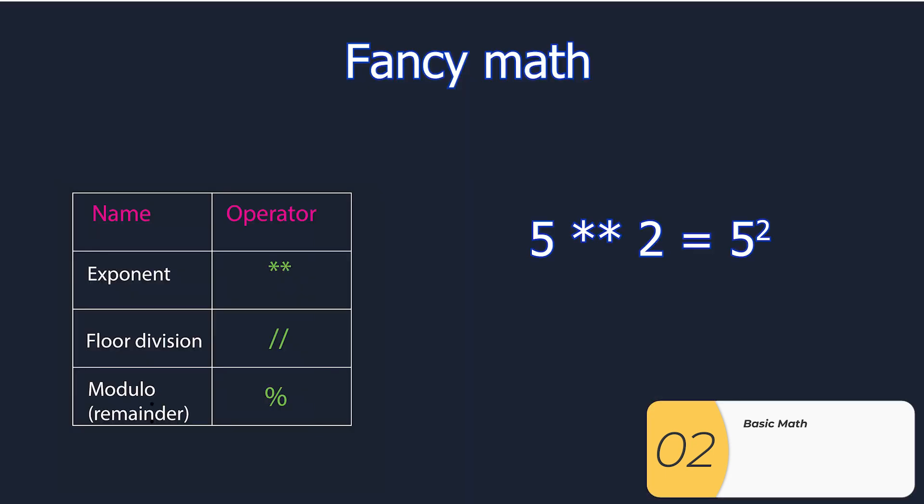Then we have some fancier math. The exponent, which is two stars instead of the carrot. We have floor division, which is a double slash. And we have the modulo, which is the percent. Now, most people aren't quite sure what these mean. So here's an explanation.